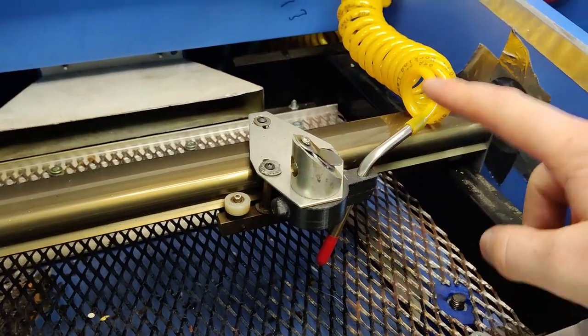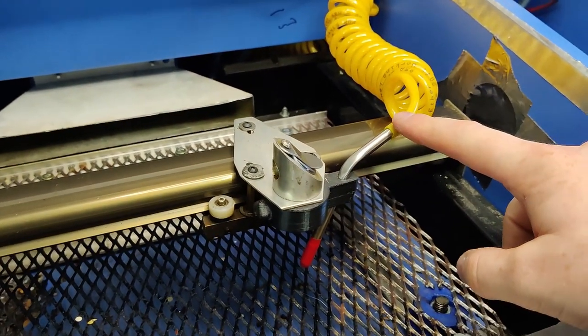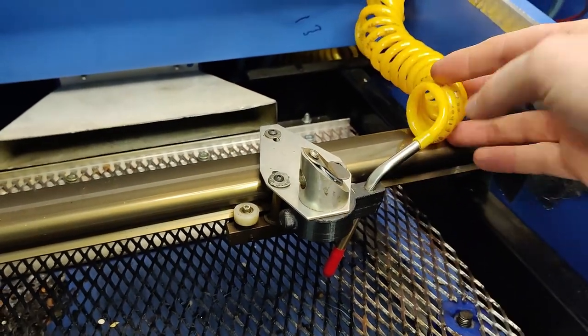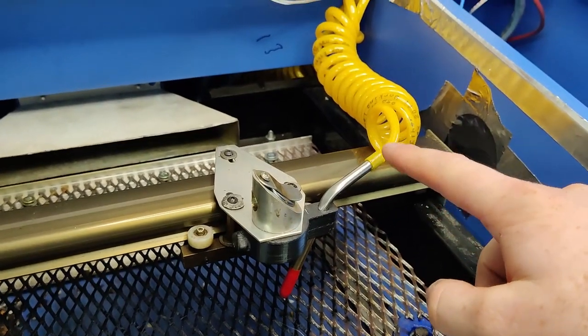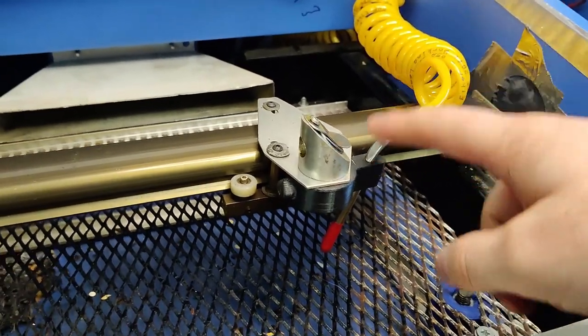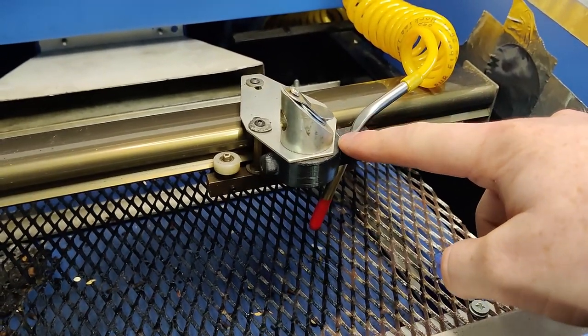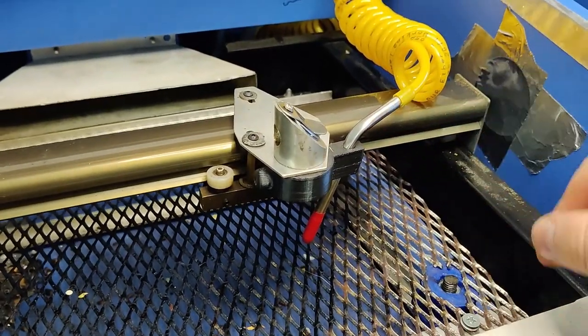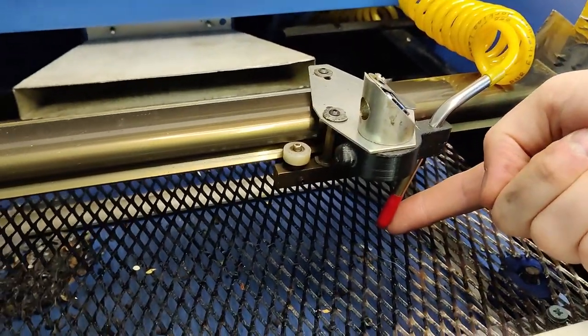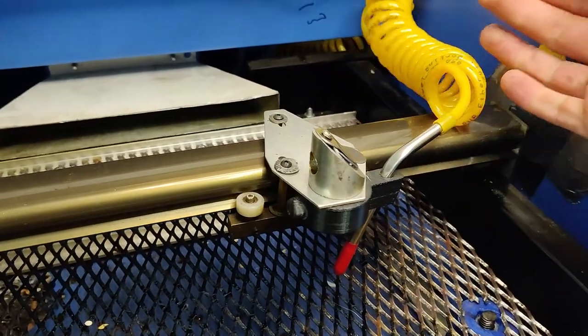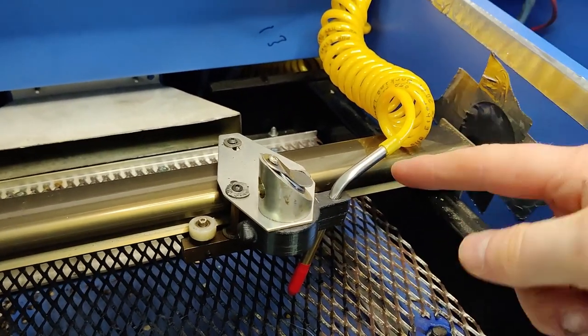The first thing you're going to want if you're going to cut materials on your machine will be an air assist nozzle. This is my setup here and it's the one that I purchased when I first got the machine. It consists of a small 3D printed bracket, a steel tube, a little nozzle at the end, and some way of pumping air through the system.